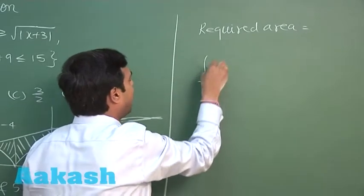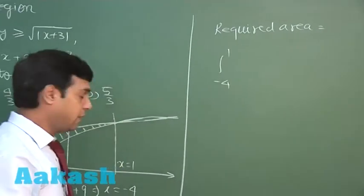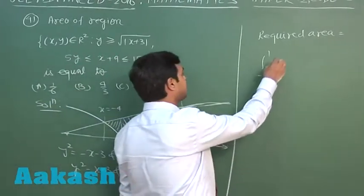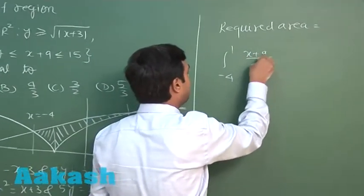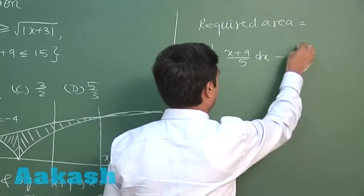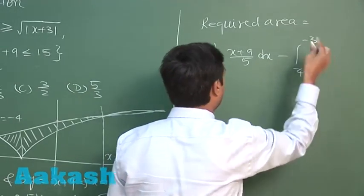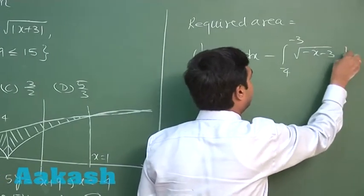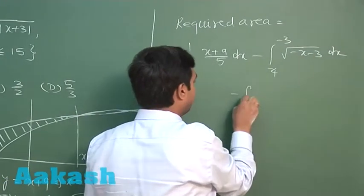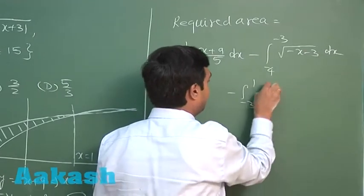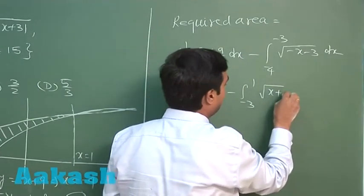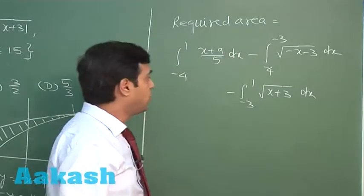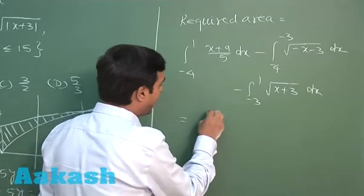We obtain integral minus 4 to 1, under this line, right, that is (x+9)/5 dx minus integral minus 4 to minus 3 root of (minus x minus 3) dx, minus integral minus 3 to 1 root of (x+3) dx.